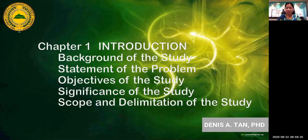Chapter 1 of your research proposal is entitled Introduction. The whole chapter is an introduction of your proposal. In that chapter, you have five sub-parts: the background of the study, statement of the problem, objectives of the study, significance of the study, and scope and delimitation of the study.